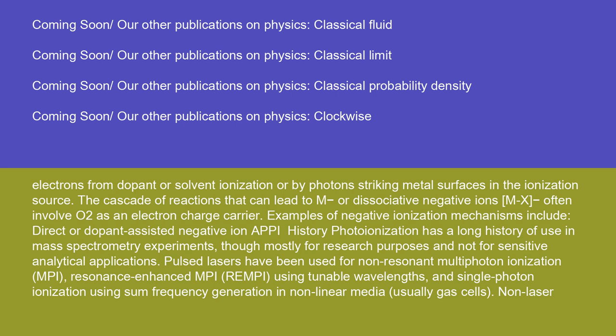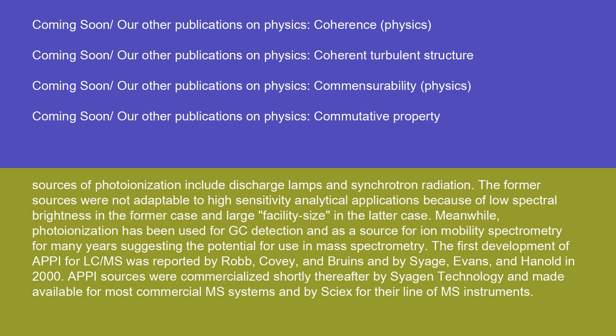APPI history: photoionization has a long history of use in mass spectrometry experiments, though mostly for research purposes and not for sensitive analytical applications. Pulsed lasers have been used for non-resonant multi-photon ionization (MPI), resonance-enhanced MPI (REMPI) using tunable wavelengths, and single-photon ionization using sum frequency generation in non-linear media, usually gas cells. Non-laser sources of photoionization include discharge lamps and synchrotron radiation. These former sources were not adaptable to high-sensitivity analytical applications because of low spectral brightness in the former case and large facility size in the latter. Meanwhile, photoionization has been used for GC detection and as a source for ion mobility spectrometry for many years, suggesting the potential for use in mass spectrometry.